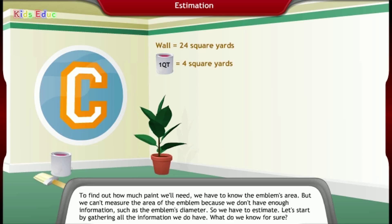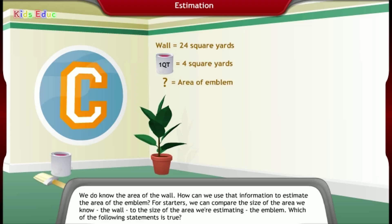To find out how much paint we'll need, we have to know the emblem's area. But we can't measure the area of the emblem because we don't have enough information, such as the emblem's diameter. So we have to estimate. Let's start by gathering all the information we do have. What do we know for sure? We do know the area of the wall.